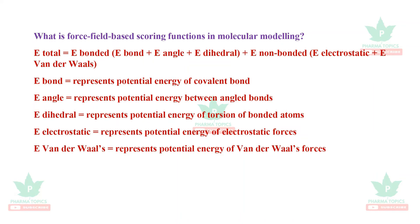The total energy in a force field equals E-bond plus E-nonbonded. E-bond is the potential energy of covalent bonds, including bond angles, bond stretching, dihedral angles, and flexibility. E-nonbonded includes electrostatic forces and van der Waals forces. Together these give the total energy.